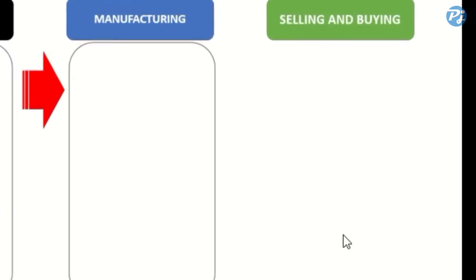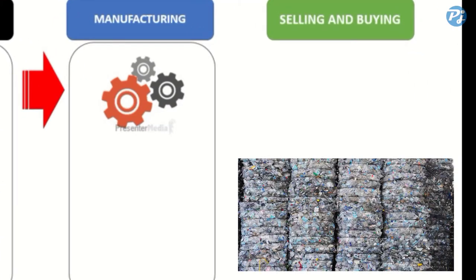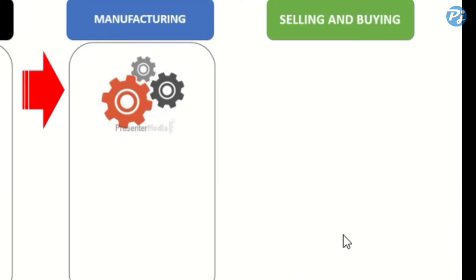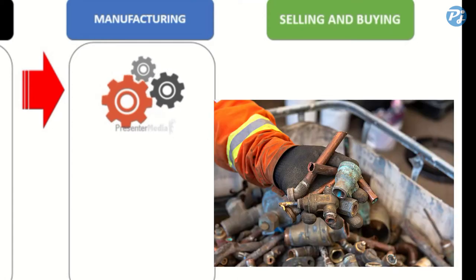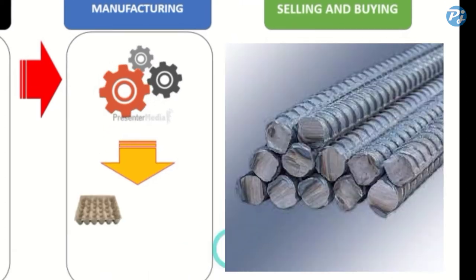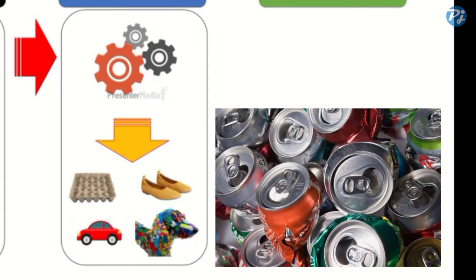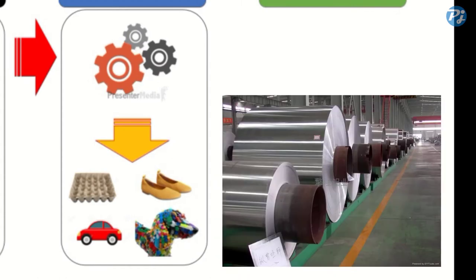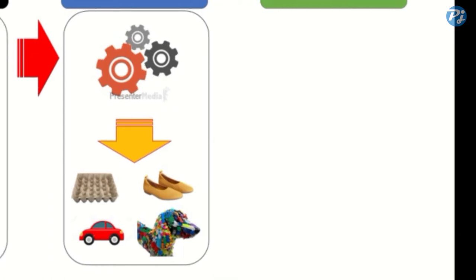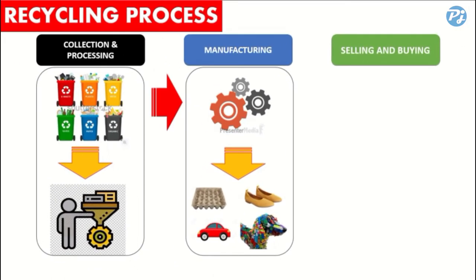Manufacturing: After the recyclable materials are sold to manufacturing plants, they are used to create new products. For example, metal is used to create rebar as a building material, and aluminium cans are used to produce aluminium sheets, which in turn are used to create cars. Here are other examples of products created from recyclable materials.